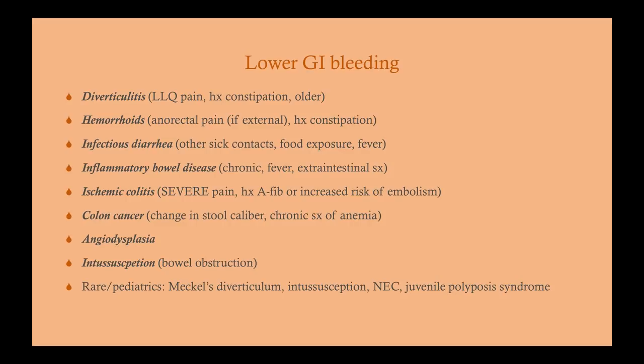Angiodysplasia: some people have a genetic predisposition. It's very difficult to diagnose because it's often in the small bowel, which isn't reachable by standard upper or lower endoscopy — upper endoscopy typically only goes to the duodenum and lower endoscopy to the cecum. If endoscopy is negative, angiodysplasia is often the cause. Intussusception — a telescoping of the bowel — should be on the differential for pediatric patients with lower GI bleeding, as it causes ischemia and bleeding due to interrupted blood flow.